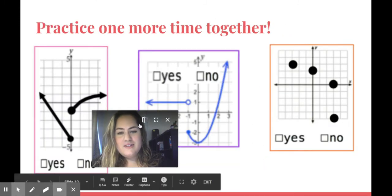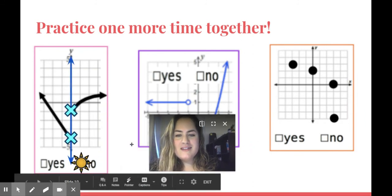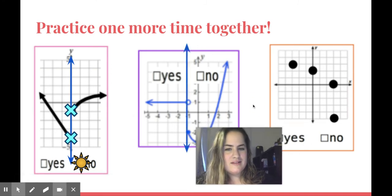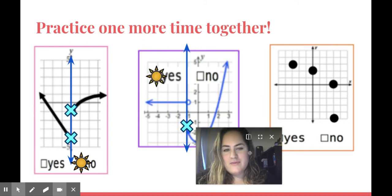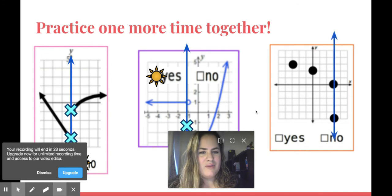Let's practice. So this first one, I draw my vertical line. It hits twice. Not a function. The second example, I draw my vertical line. Open circle doesn't count. It hits once. So that's fine. Yes, it's a function. My last example, a bunch of dots. I draw my vertical line. It's twice. Not a function.